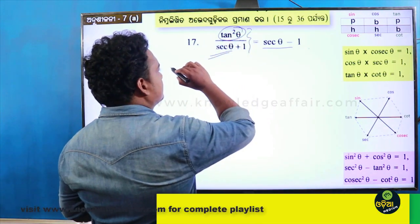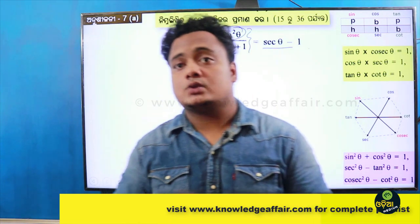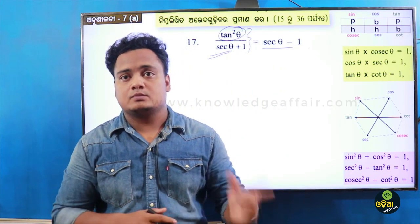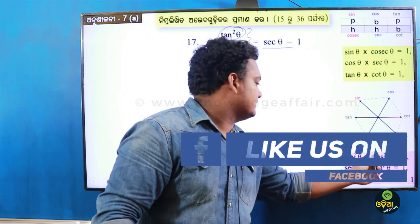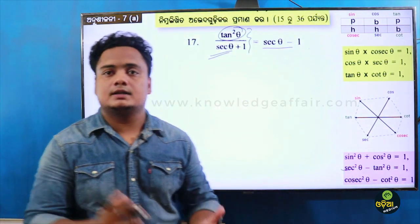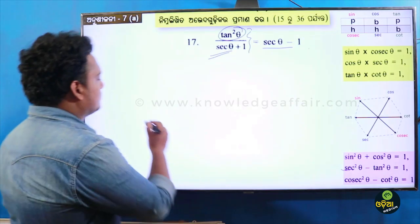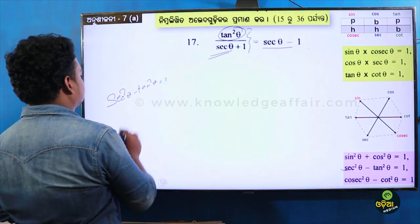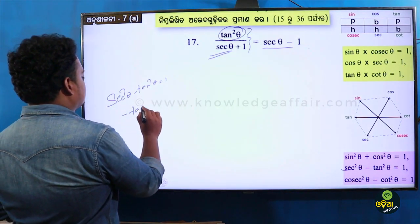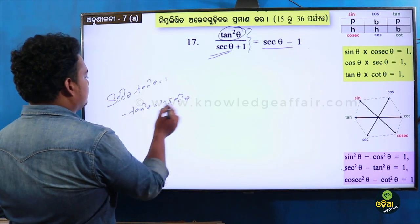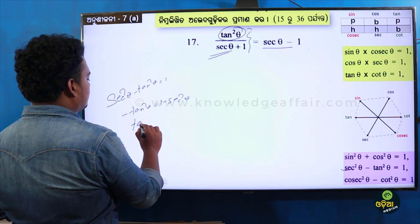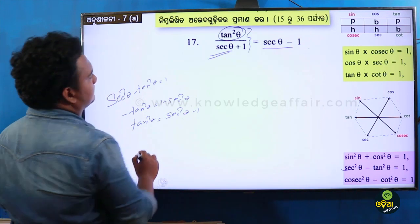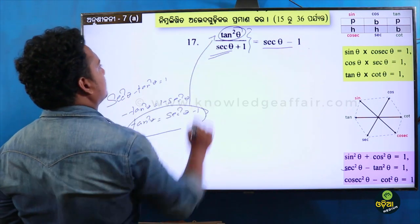The numerator part is tan squared theta. We will take tan squared theta and apply the identity: tan squared theta equals sec squared theta minus 1.